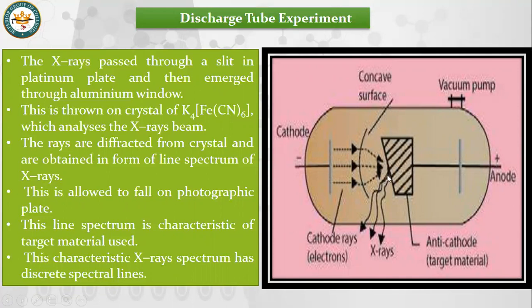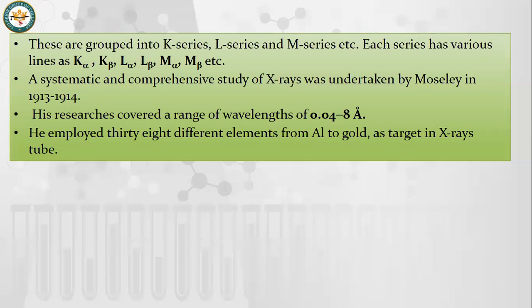The X-rays depend on the nature of the anti-cathode particle. Depending on which particle is used, the wavelength of the rays will vary accordingly. X-rays are divided into the K-series, L-series, and M-series. These series are further subdivided into α and β lines.